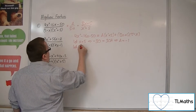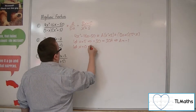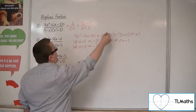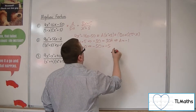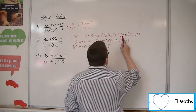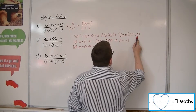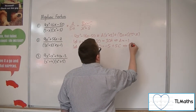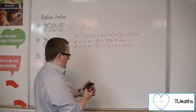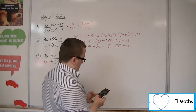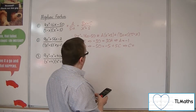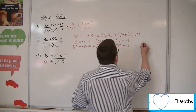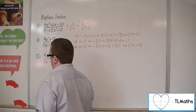Now letting x equal 0, we get minus 50 on the left-hand side. We get 5 lots of a, so minus 5. The x terms vanish, leaving just 5c. Adding 5 to both sides gives minus 45, then dividing by 5 gives c equals minus 9.